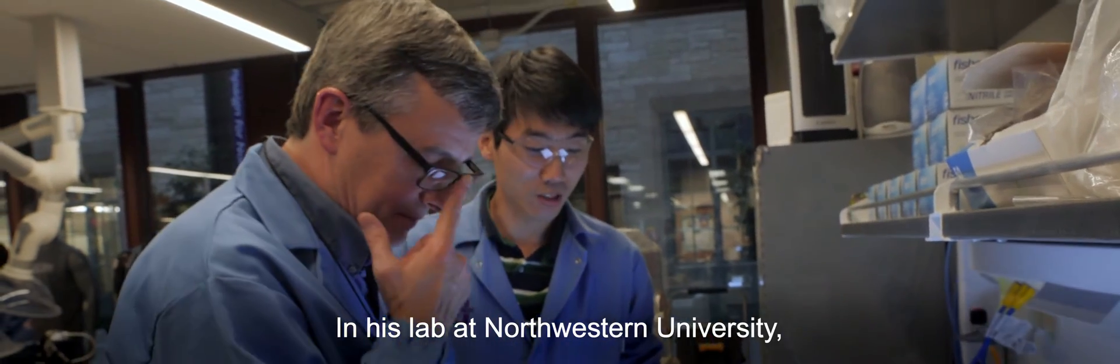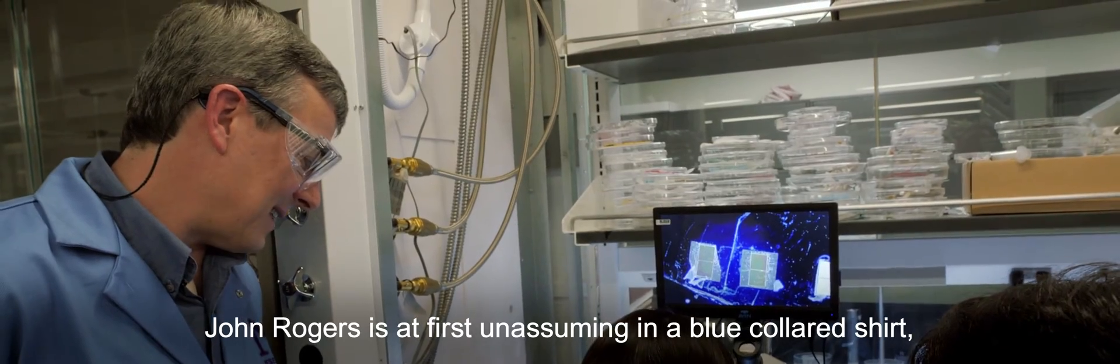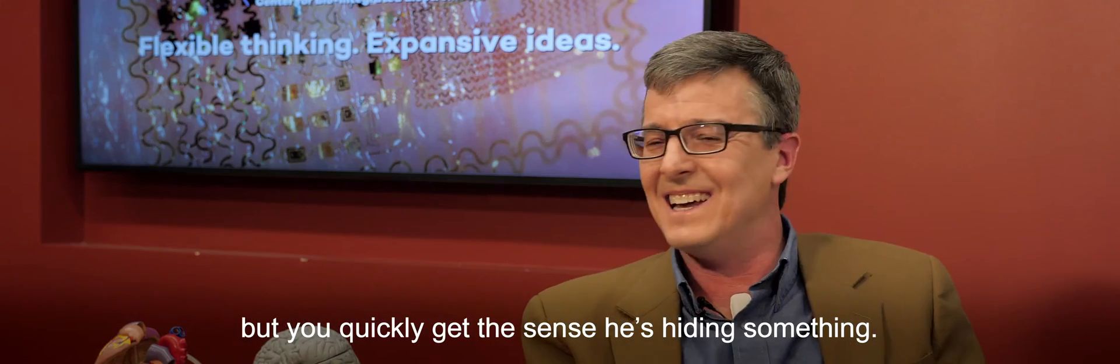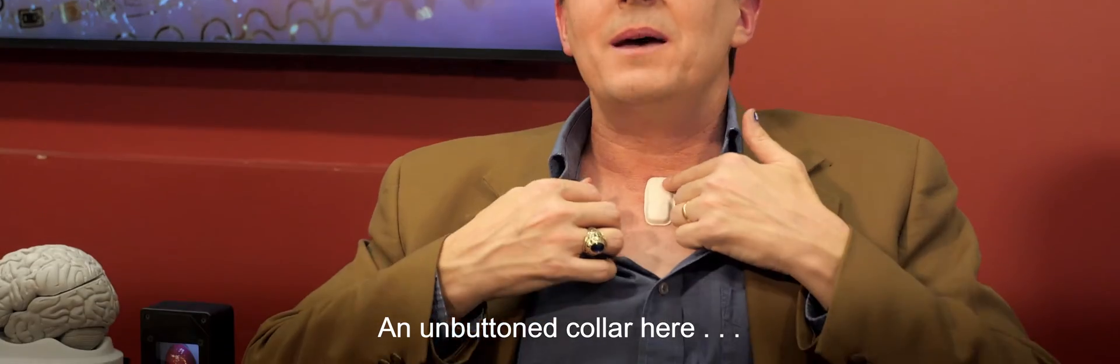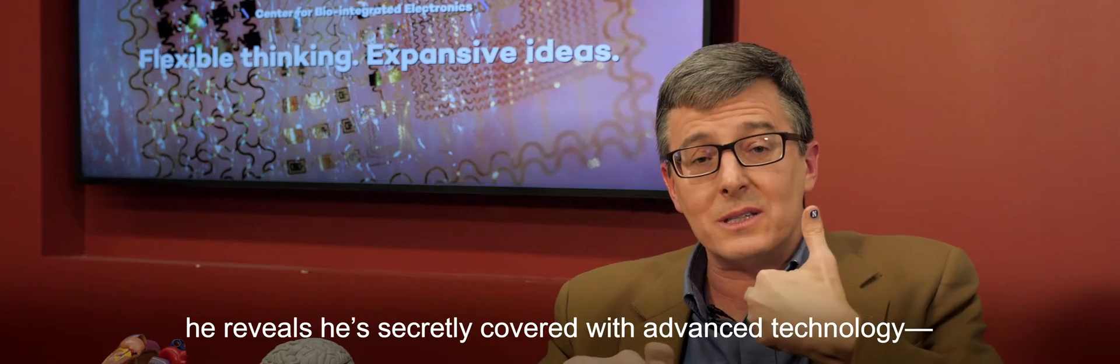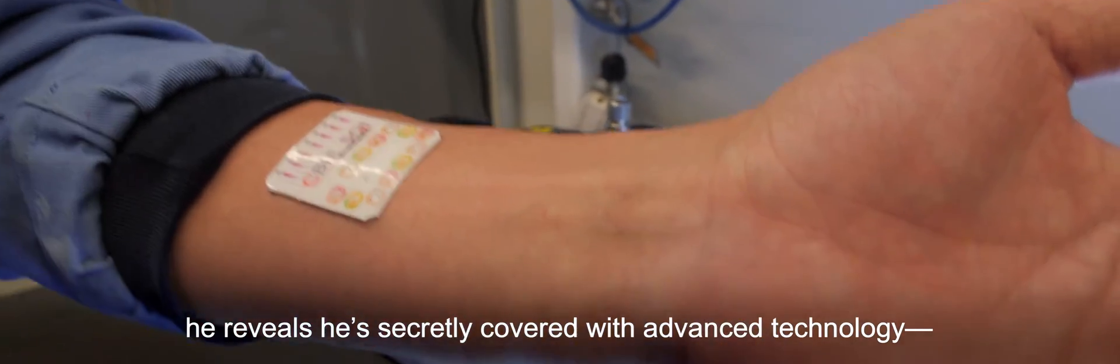In his lab at Northwestern University, John Rogers is at first unassuming in a blue-collared shirt. But you quickly get the sense he's hiding something. An unbuttoned collar here, a rolled-up sleeve there. Over the course of an hour, he reveals he's secretly covered with advanced technology, like a bio-electronic Batman.